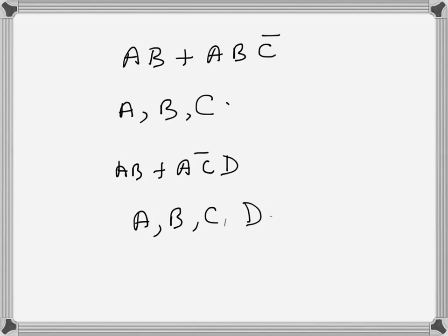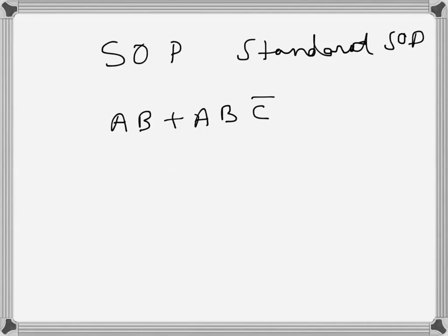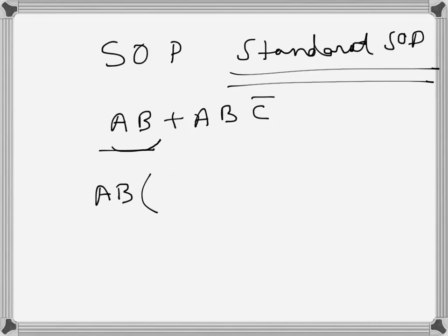Now I will talk about sum of products (SOP) and standard sum of products (standard SOP). A sum of products expression looks like this — but when we express it as the standard SOP, we have to include all the variables in each product term. So for example, if a term has only a and b, we have to incorporate c as well, because a·b is actually a·b·c plus a·b·c-bar.